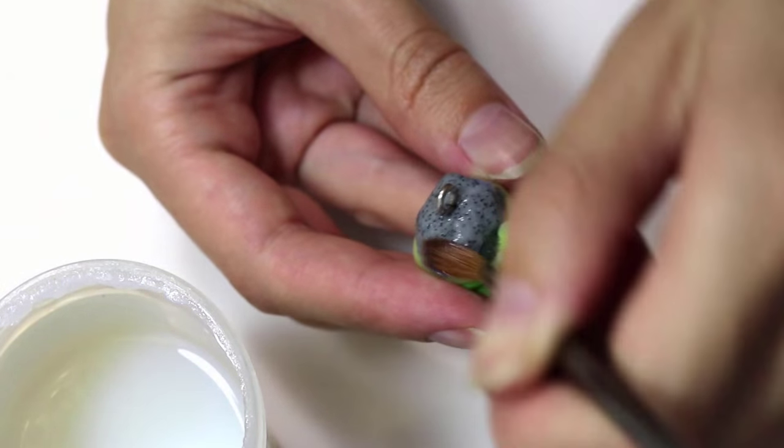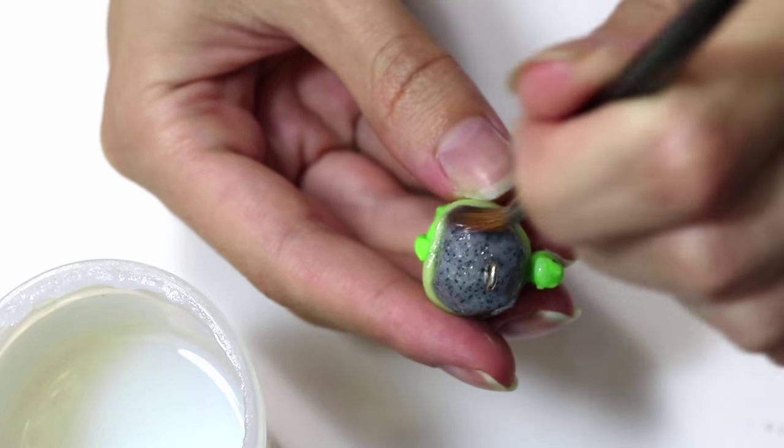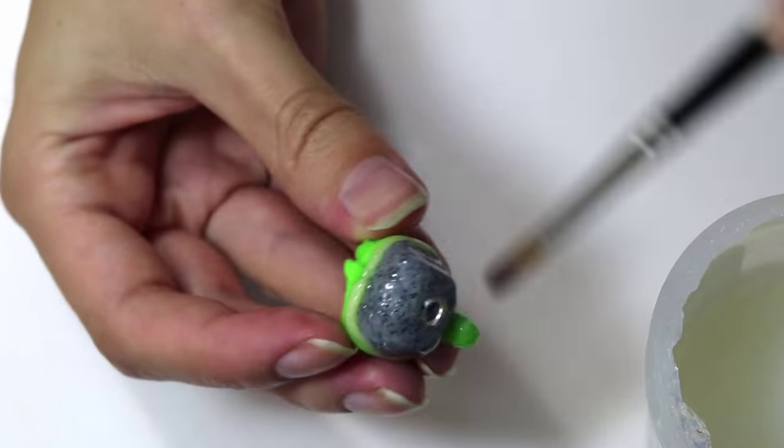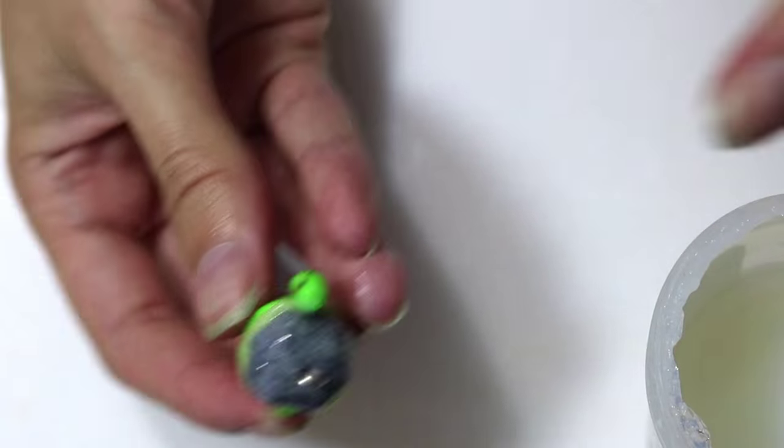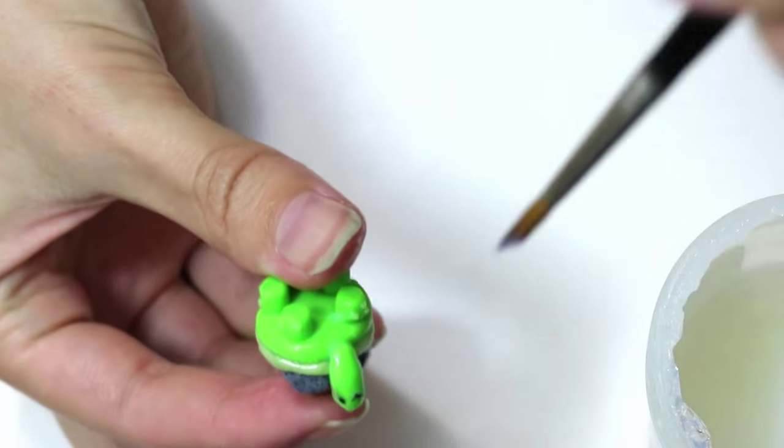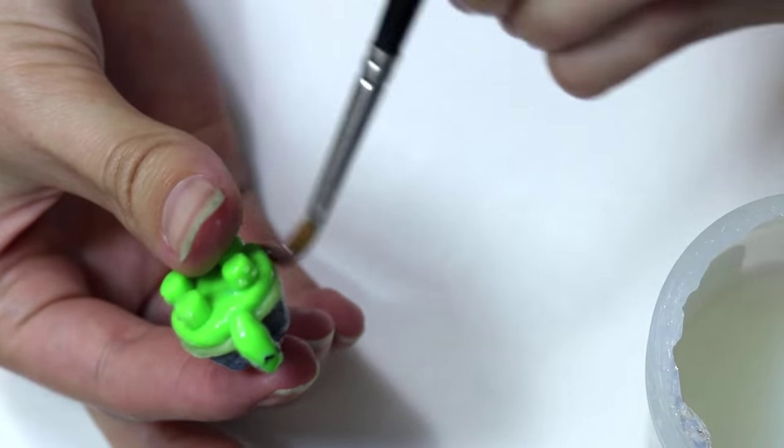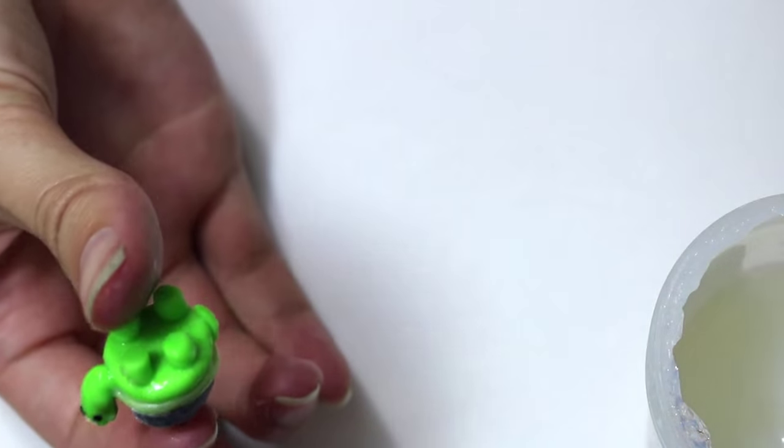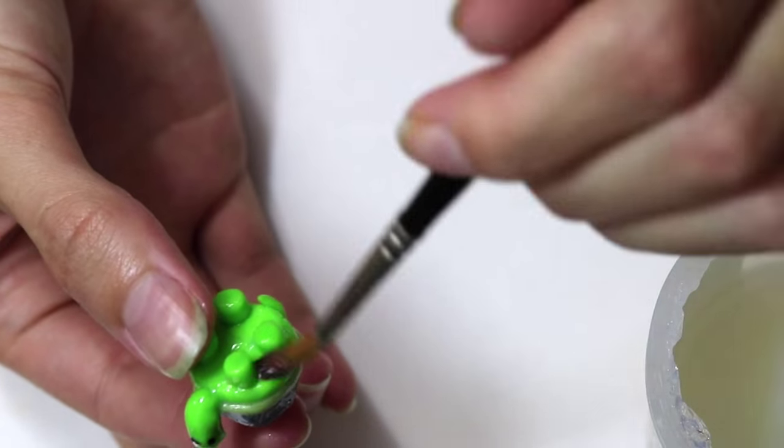So once you're done baking it's time to gloss it. And I just decided to put gloss all over the whole turtle. And then leave that to dry and you're done.